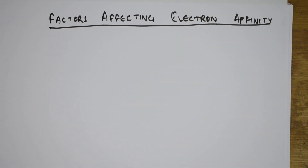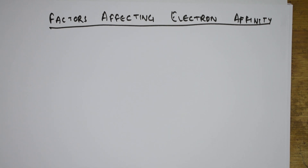We have already seen the definition of electron affinity in the previous video. Welcome back. Today we will be almost completing the chapter. Let us see the factors affecting electron affinity, also called electron gain enthalpy.